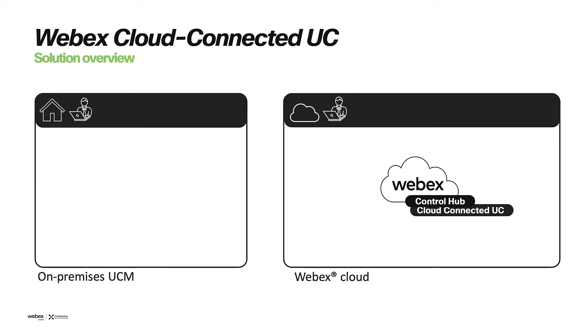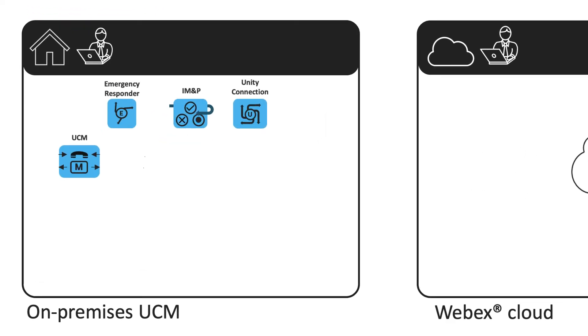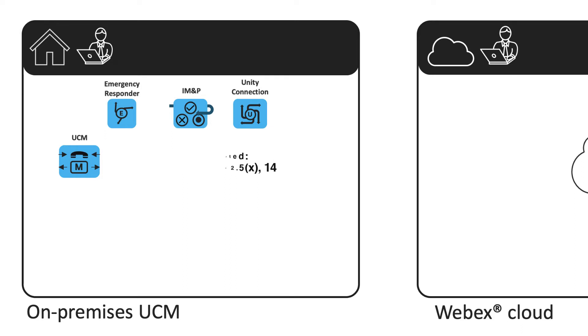Identify your environment to be onboarded. Currently, CCUC supports UCM, Emergency Responder, IM and Presence, and Unity Connection for onboarding. The specific product support per feature can be found in Control Hub.